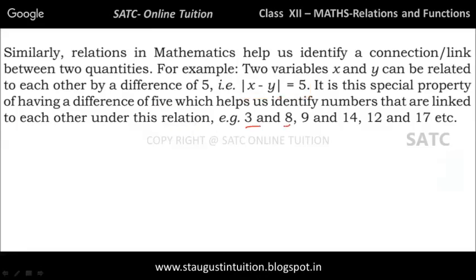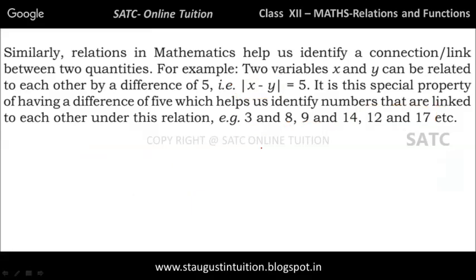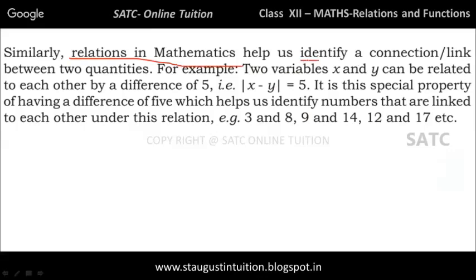For example, 9 and 14: 14 minus 9 is equal to 5, and 9 minus 14 is equal to minus 5. But the modulus of x minus y equals 5, so both satisfy the relation. Similarly, other pairs like 12 and 17 also satisfy this. So relations in mathematics help us identify a connection or link between two quantities.